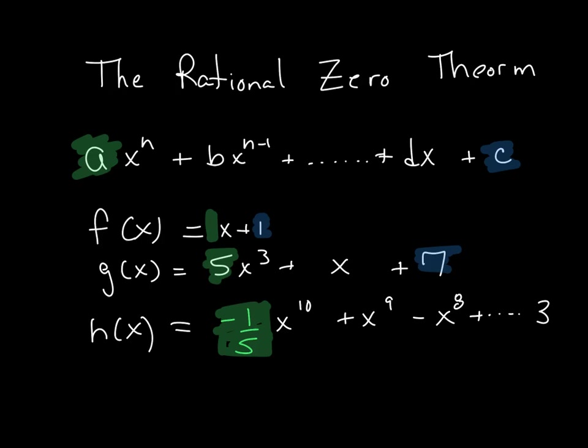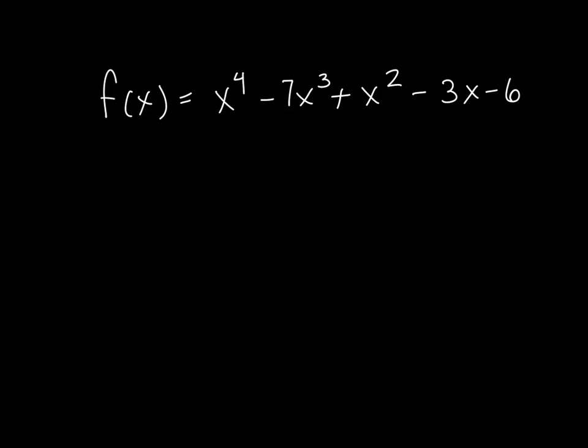Now, if this last term didn't exist, it would be 0, and we would have to factor an x out of every single term.